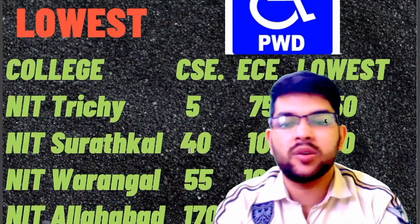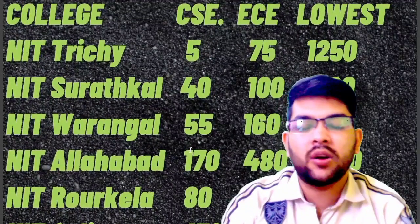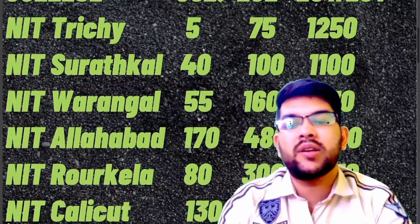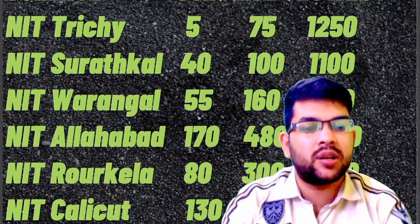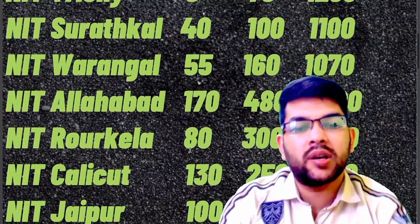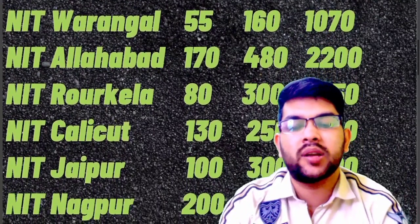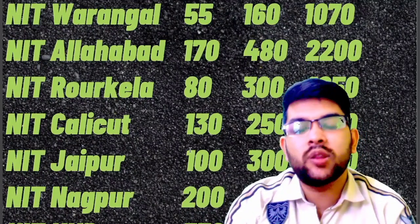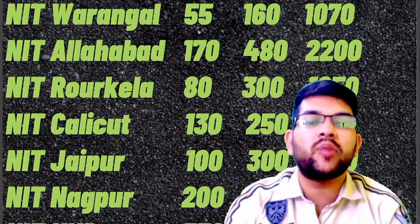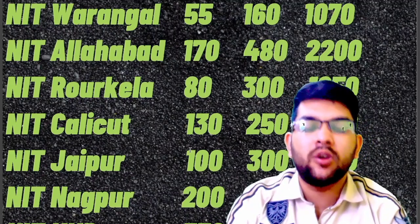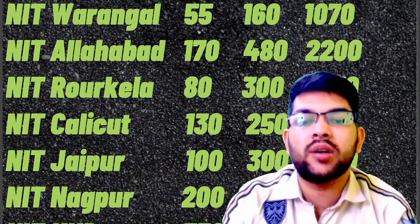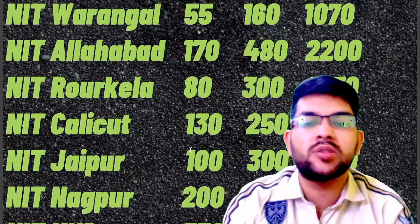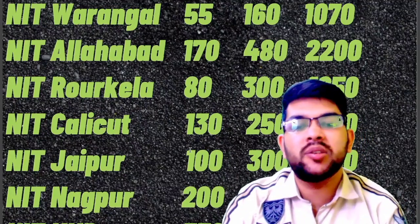For NIT Rourkela, the cutoffs are 80 for CSC, 300 for EC, and 1850 for the lowest possible branch. For NIT Kozhikode, it is 130, 250, and 350. For NIT Jaipur, it is 100, 300, and 1600. For NIT Nagpur, it is approximately 200, 360, and 2100. You can see that the CSC cutoff and other branches' cutoffs have a large difference because everyone wants to get the CSC branch.